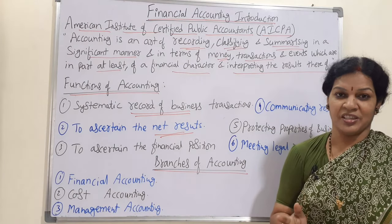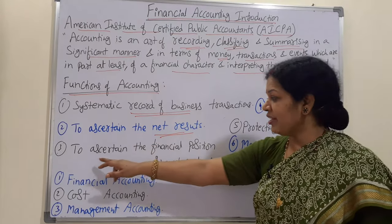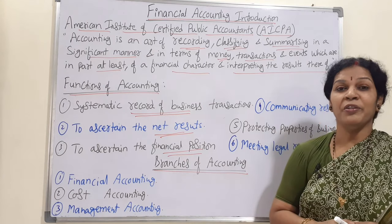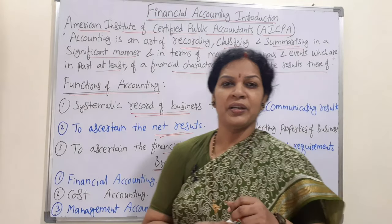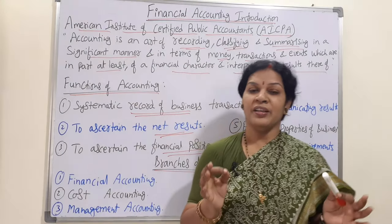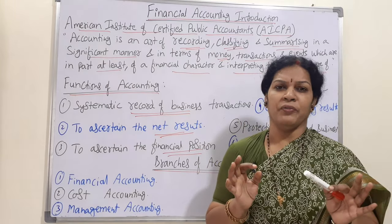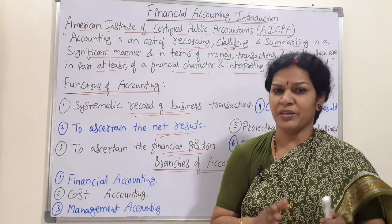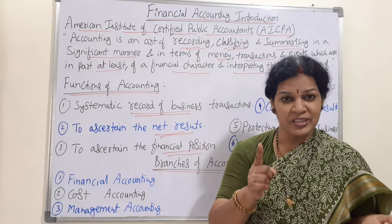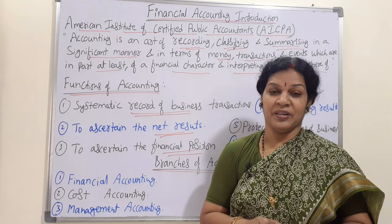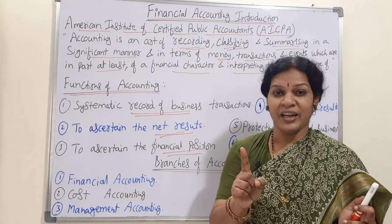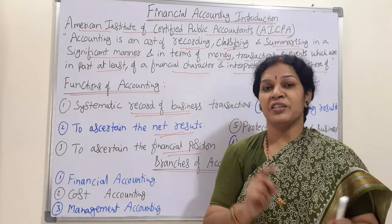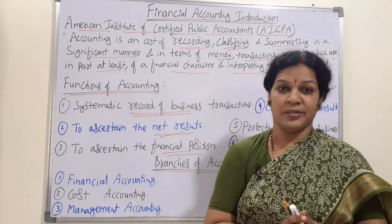Another function is to ascertain the financial position — is it good, bad, or satisfactory? Many people ask how we can tell the financial position by looking at the balance sheet. To know the financial position, final accounts are required. In final accounts, we first see the profit or loss. If it is showing profit, that is one good sign that the financial position of the organization is good.